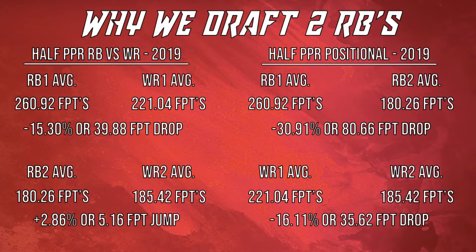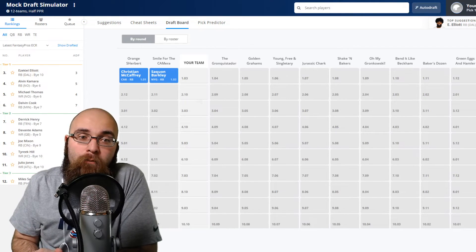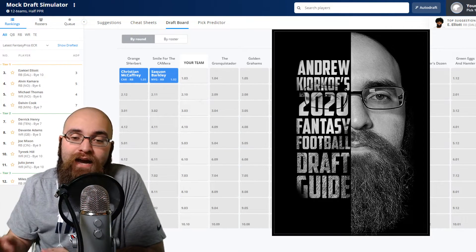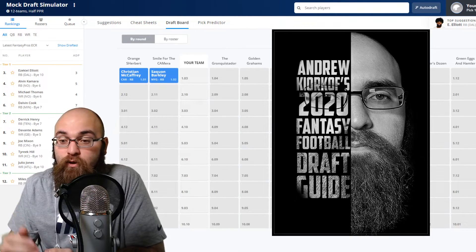The wide receiver drop-off from WR1 to WR2 is not nearly as significant, which is why I'm comfortable drafting a WR2 with upside. Guys like Robert Woods and Tyler Lockett are significantly undervalued for where they're going and what they produce yearly. If they catch a couple extra touchdowns or get extra targets — like with Brandon Cooks traded out of the Rams offense — there's always potential for an incline in production. This overall perspective explains why I target two RBs in the first three rounds and why the drop-off at running back scares me.